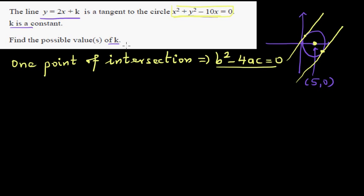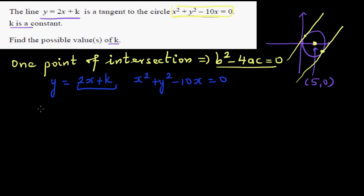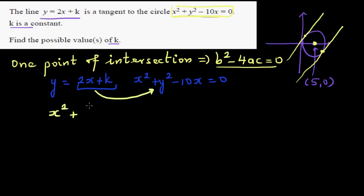What they are saying is this line is a tangent to the circle, so there is one point of intersection. We have y equals 2x plus k, and x squared plus y squared minus 10x equals 0. In place of y, I can put 2x plus k. So this implies: x squared plus, instead of y squared, I write 2x plus k, the whole squared, minus 10x equals 0.